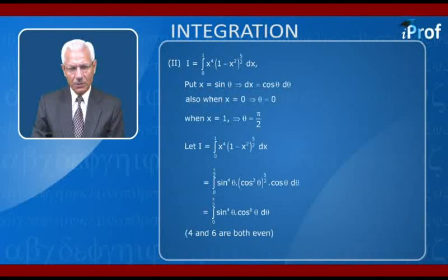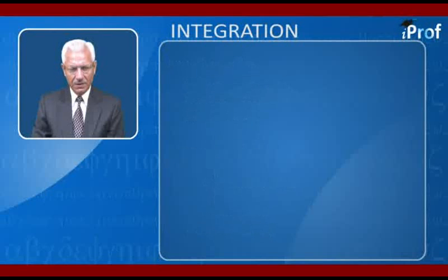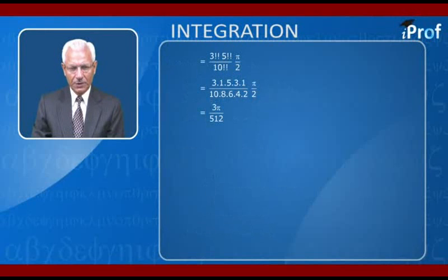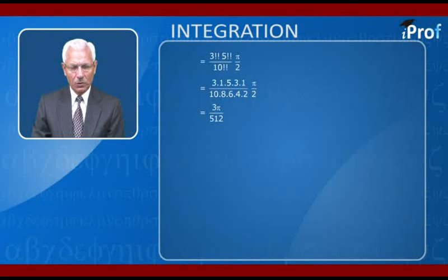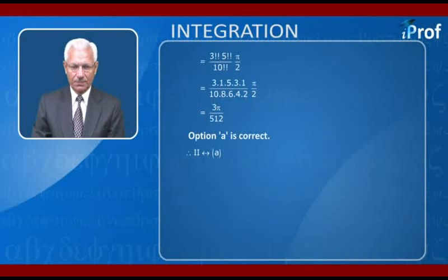Since 4 and 6 are both even, we apply the formula: (3!!·5!!) / (10!!) · π/2 = (3·1·5·3·1) / (10·8·6·4·2) · π/2, which simplifies to 63π/20 — wait, simplifying 3·5/(512)... giving option A. Therefore, question 2 matches option (a).